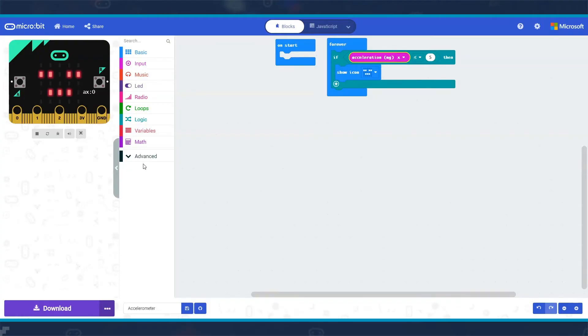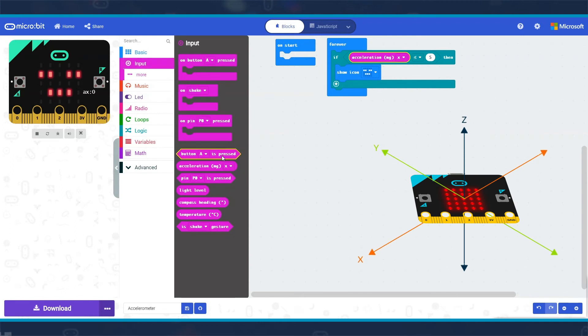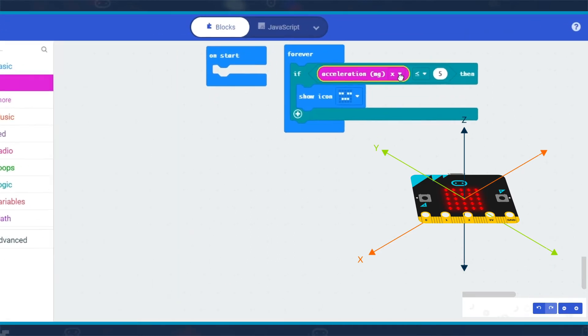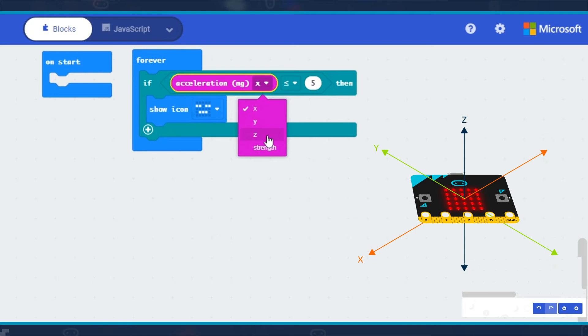There is an input block that lets you access the value of the x, y or z-axis. In the input menu, select the acceleration block. From the drop-down box you can choose x, y, z or strength. Strength is the combined value of x, y and z.